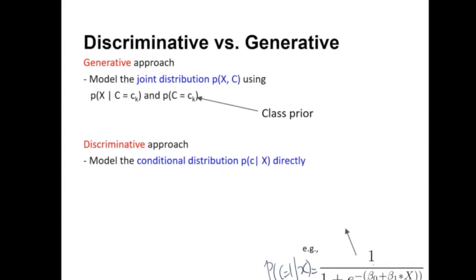Let's compare discriminative classifier versus the generative classifier. The generative classifier models P(x|C) and P(C) itself, whereas the discriminative classifier models P(C|x) directly.